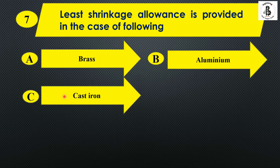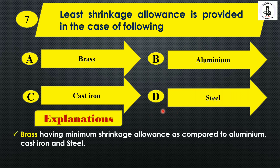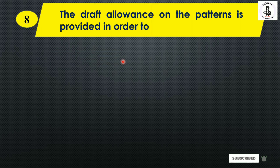The next question: least shrinkage allowance is provided in case of — option A: brass; option B: aluminium; option C: cast iron; option D: steel. Brass has the minimum shrinkage allowance compared to aluminium, cast iron, and steel, so the right answer is option A.